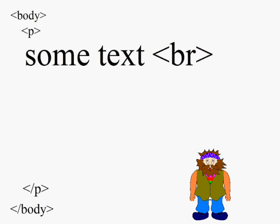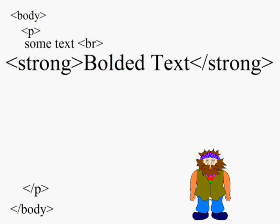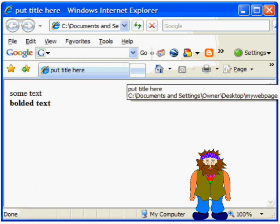So let's make the next block of text bold. To make text display in bold print, we use the strong emphasis tag. This is an opening and closing tag with the word 'strong' in it. We put our bold text in between these two tags, save it, and when we open it up in the browser, we see that our second block of text appears on the next line and is bold.